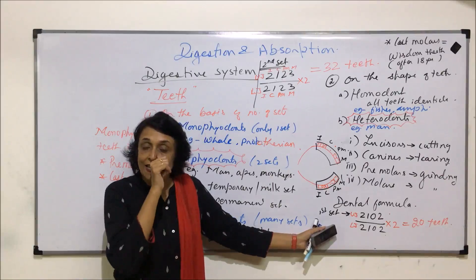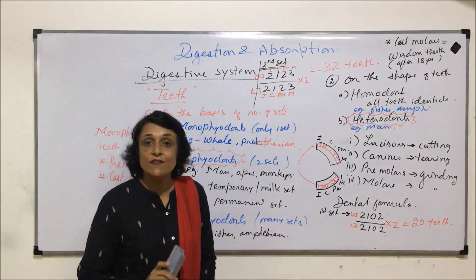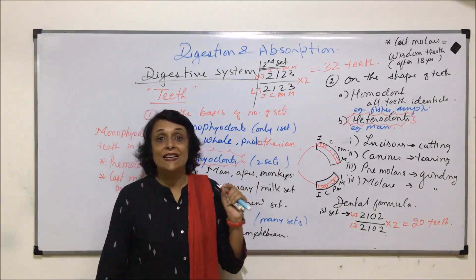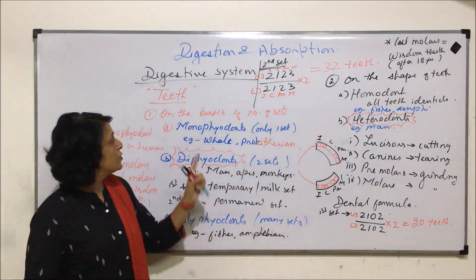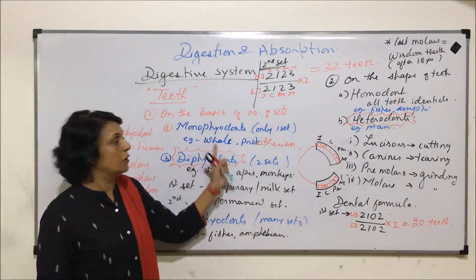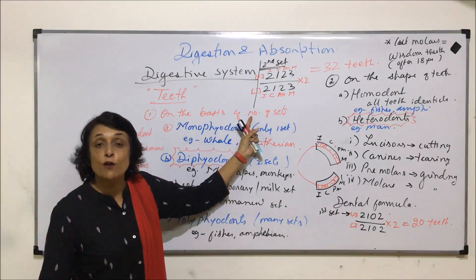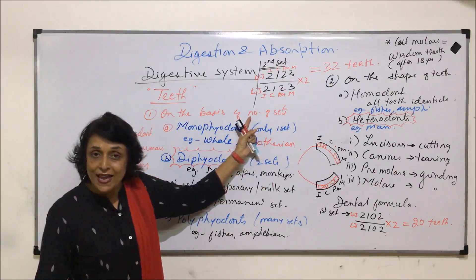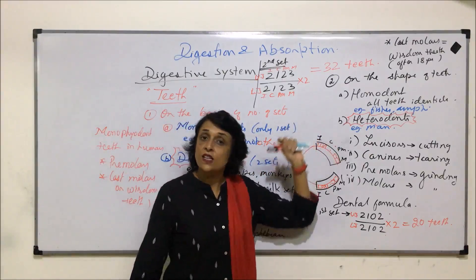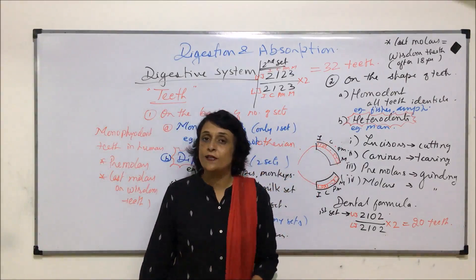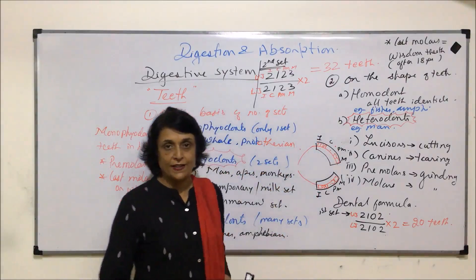So knowing the formula is one thing, and interpreting that formula is another important skill. We have classified teeth on the basis of two things: the number of sets an organism gets, and the shape of the teeth. There are two more ways in which we can classify teeth, which we will take up next.